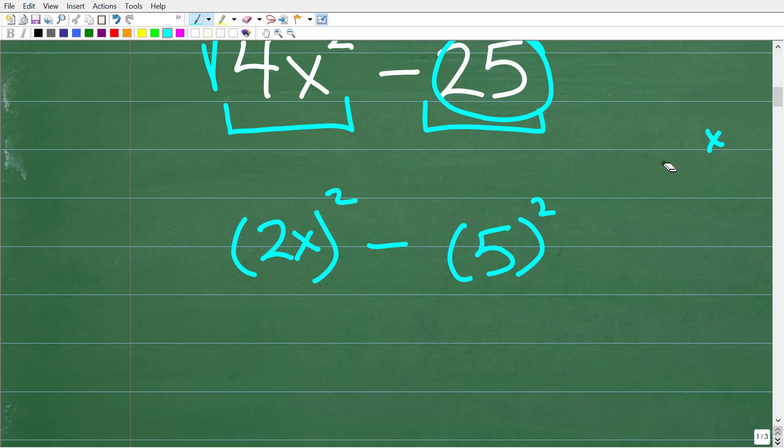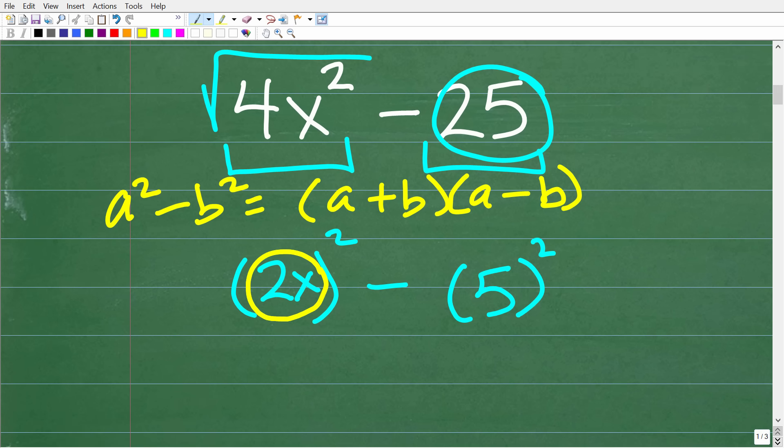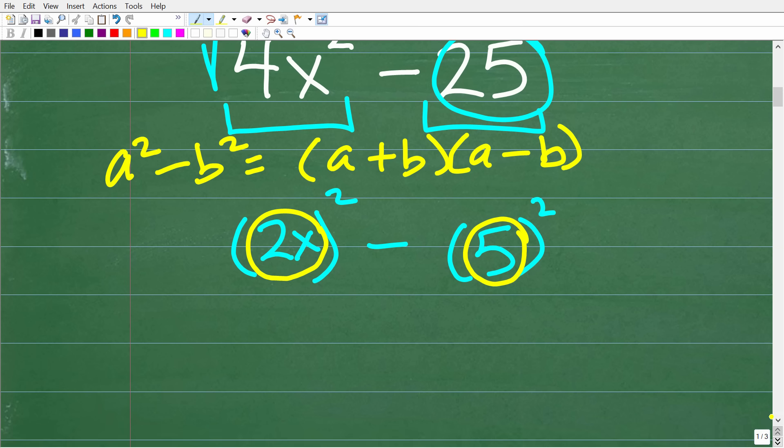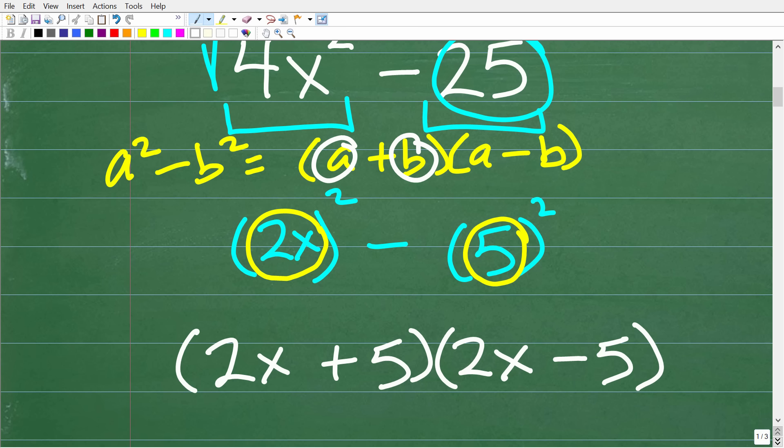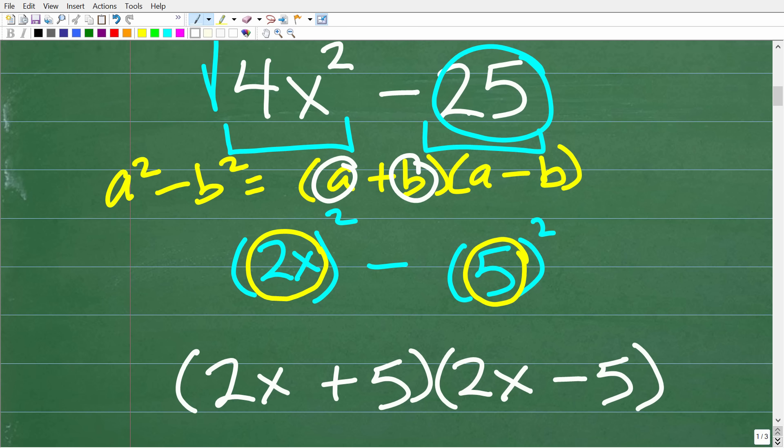What is the rule again for the difference of two squares? I'll write it out right here. So a² - b² is equal to (a + b)(a - b). Now in this situation, the a is 2x and the b is 5. So we need to just follow the pattern here very carefully and then we'll simplify. So a + b is what? Well, that'll be 2x + 5. Our a here is 2x and our b is 5. So we're going to have a - b, which is 2x - 5. These are the factors of 4x² - 25.